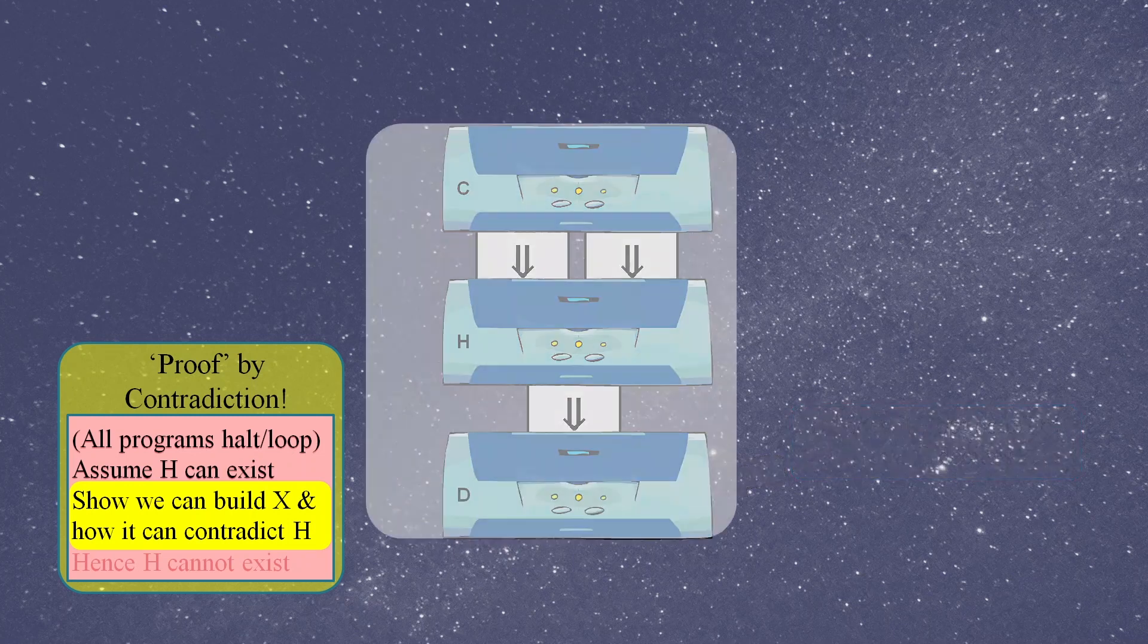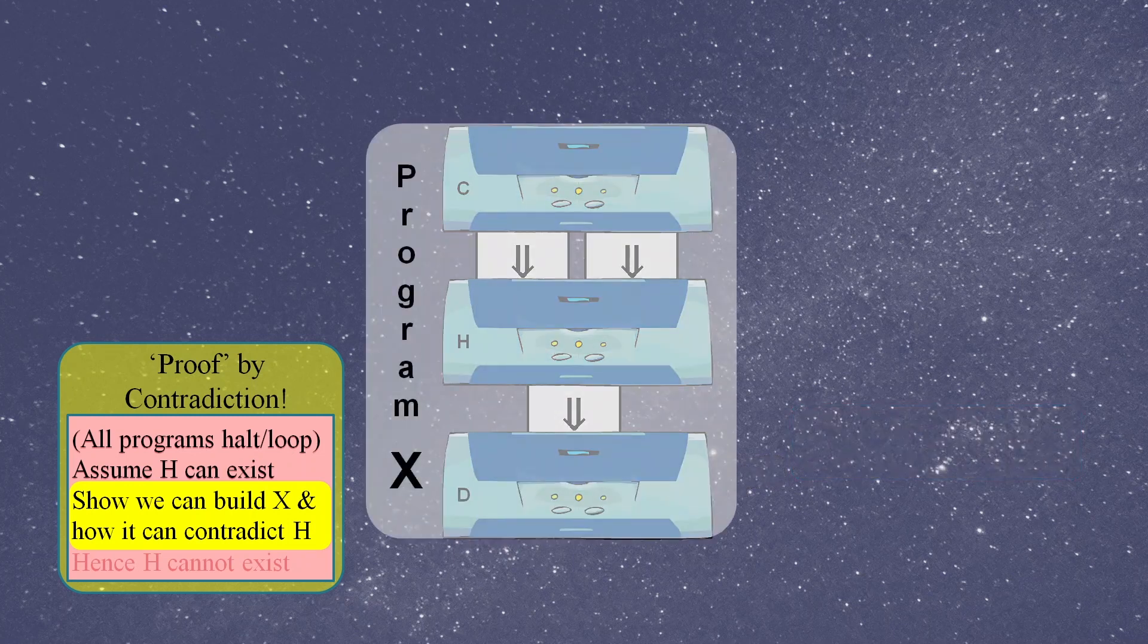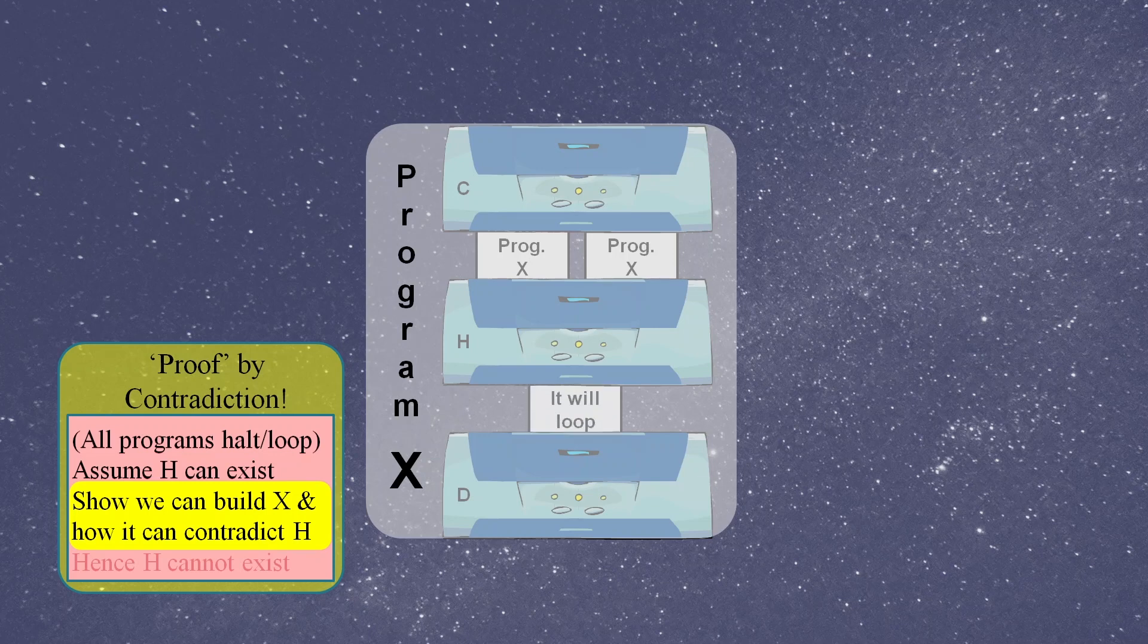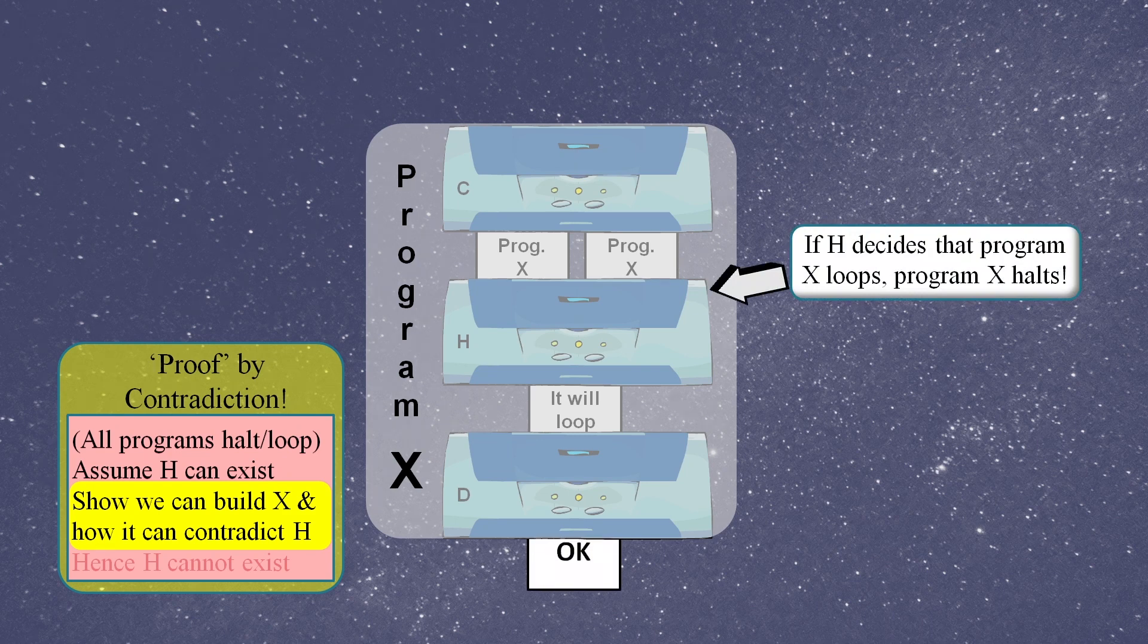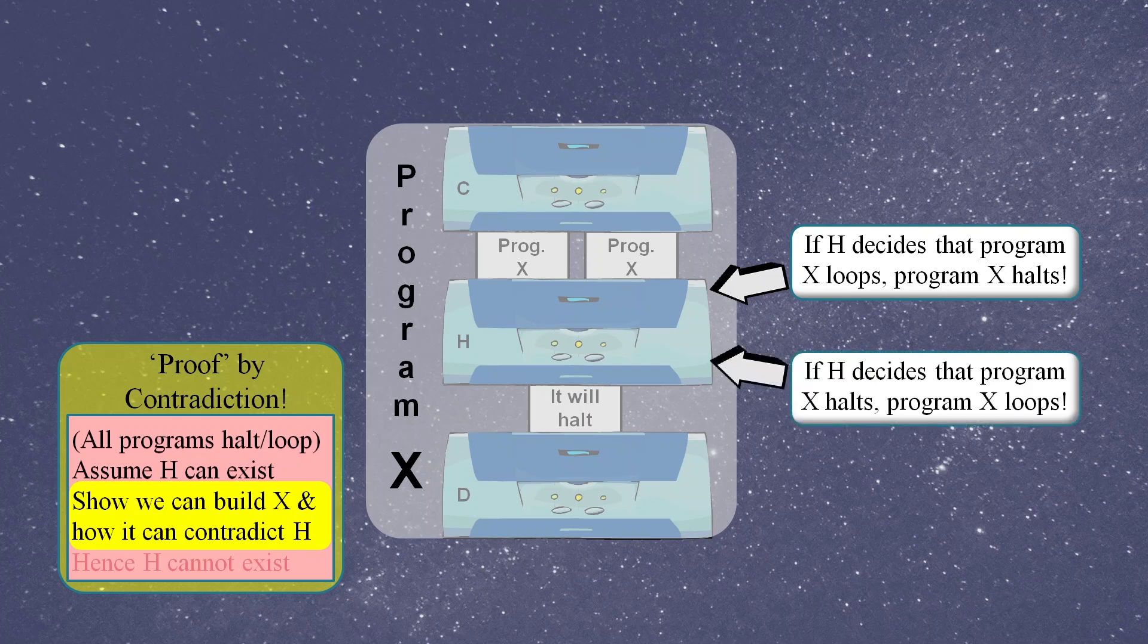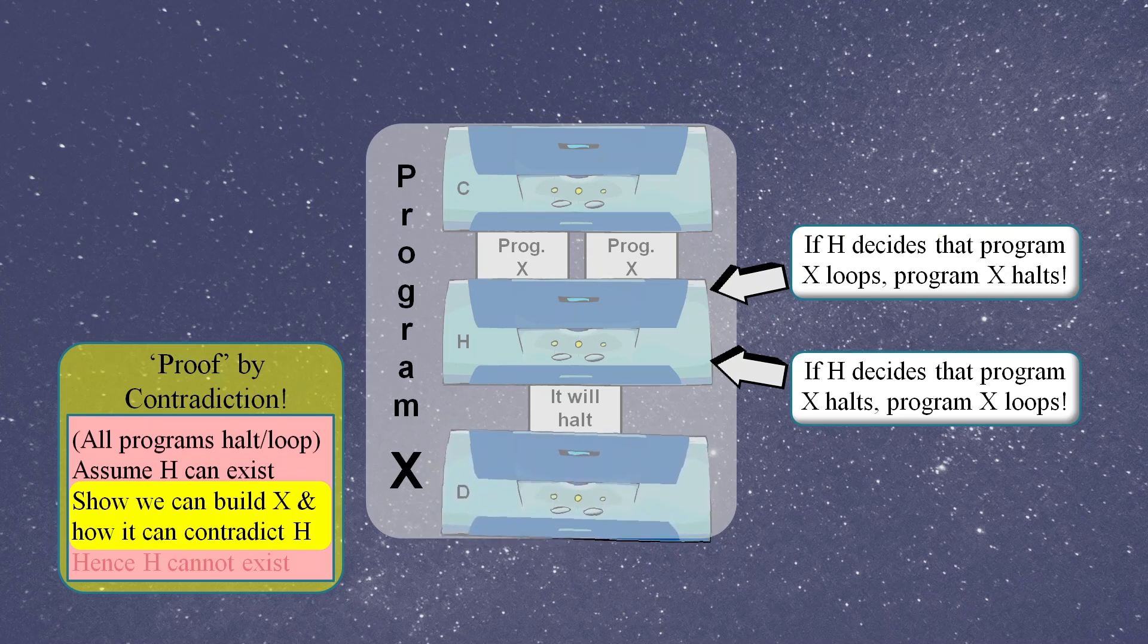These three pieces of functionality are combined into one program that we call program X. Now here's the really clever bit: We use the code of program X as input to itself. The copier then makes two copies of program X which feed into the functionality of our halt loop decider H. So if H decides it will loop, then this goes into functionality D which forces it to halt. And so the final state of program X would appear to contradict the output of H. And if H says it will halt, then the functionality of D will go into a loop, which again appears to contradict the output of H. The contradictions mean that program H cannot exist.